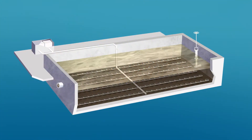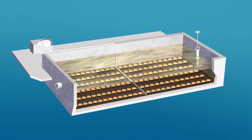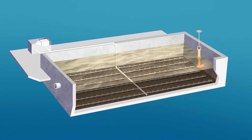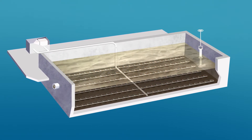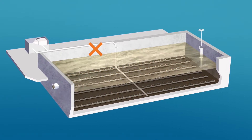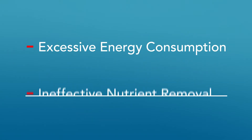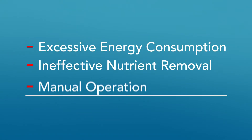Many aerobic digesters simply have an aeration grid connected to a blower, with manual decanting of the liquid supernatant and no instrumentation. This results in excessive energy consumption, ineffective nutrient removal, and manual operation.